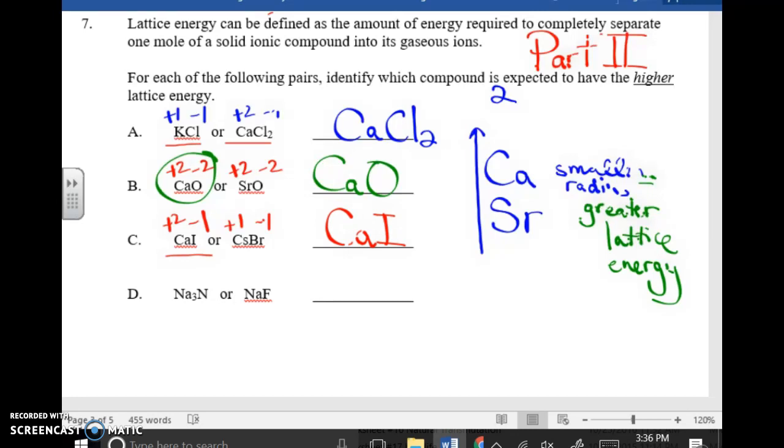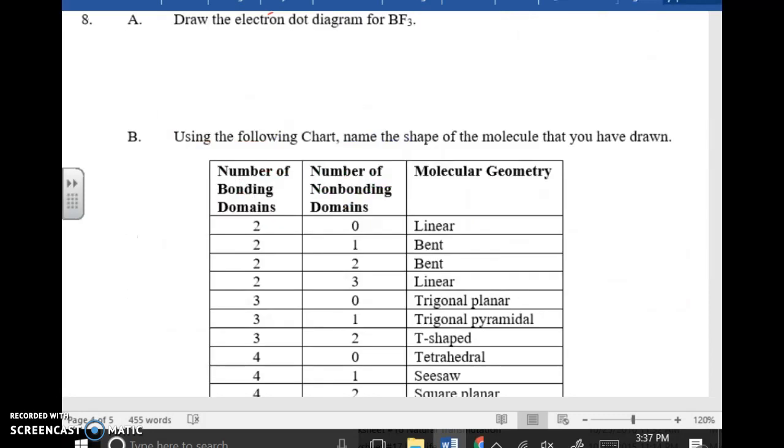Na3N, question D, Na3N or NaF. Na is plus 1, N is minus 3. Na is plus 1, F is minus 1. Well, notice that N has a greater negative charge than F does, or has a greater quantity of charge. So that means that Na3N is going to be the one that has the greater lattice energy. Again, that's what you look at first. Of course, you look at charges. In the situation where charges are the same in both compounds, you use a radius as a tiebreaker.